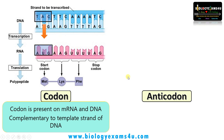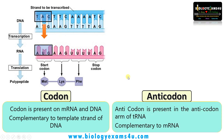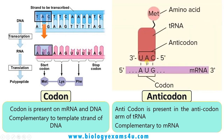Regarding the anticodon: the anticodon is present in the anticodon arm of the tRNA. This is the anticodon arm and here the anticodon is present. For the mRNA codon AUG, the anticodon is UAC, which is complementary to AUG.